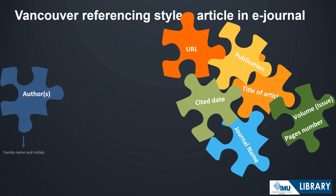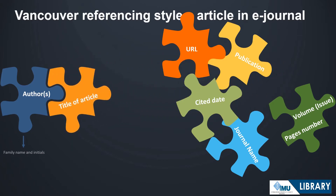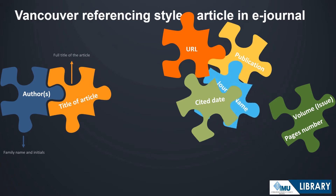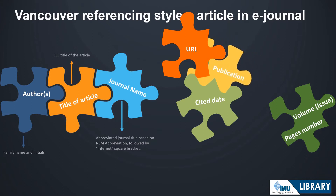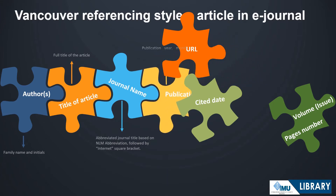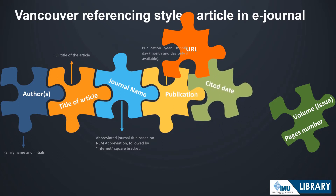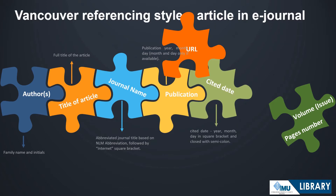Next, put the title of article. After that, please provide the abbreviated journal title based on National Library of Medicine, NLM abbreviation. Please put 'internet' in square brackets as this journal is from electronic resources. The next information key is the publication year, month and day. Here you need to provide the date when the citation is being created.